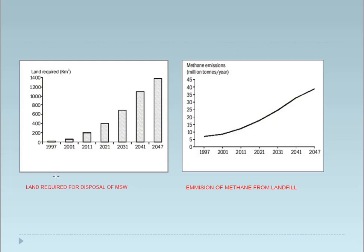Here you can see the land required for disposal of municipal solid waste. In 1997 it was somewhat less, then it goes on increasing. Now it is projected that 1400 square kilometers of area will be required by 2047. Right now it is approximately 400 square kilometers. But as per this increasing rate, it will go up to 1400 square kilometers. For a country like ours, which has less area and more population, it is very difficult to provide this much land for landfill.